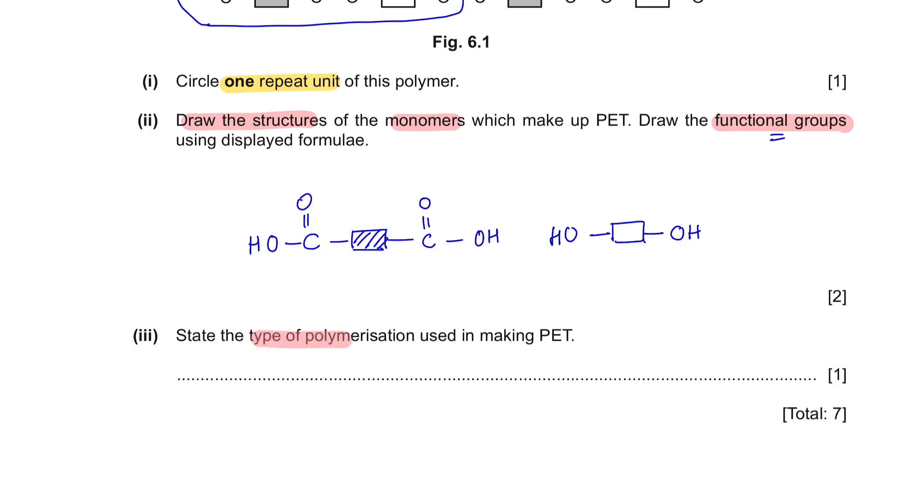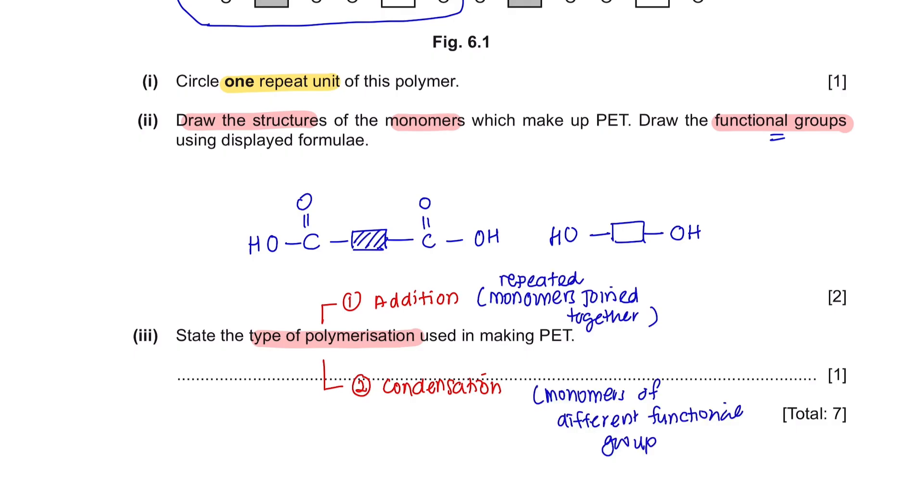Part 3: State the type of polymerization used in making PET. We have two types of polymerization. The first one is addition and condensation. Addition is when repeated monomers like alkenes are joined together. And condensation is when monomers of different functional group join together to form polymers and water. So we can see here we have two different functional groups. So the type of polymerization here is condensation.